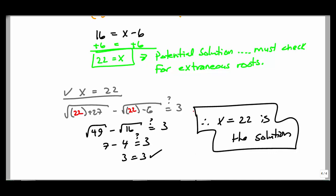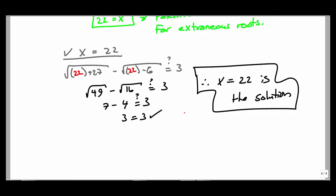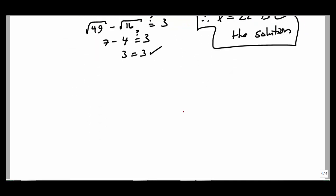You need to do these problems by hand as well because sometimes your solution might be a decimal or a square root — and your calculator won't give you that exact number. Let's look at another one of these problems with radicals on both sides. Square root of (2x + 3) plus square root of (x − 2) equals 2.